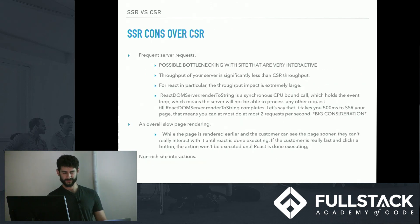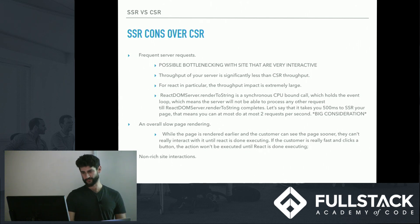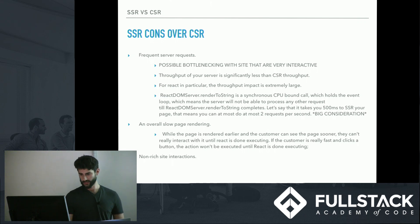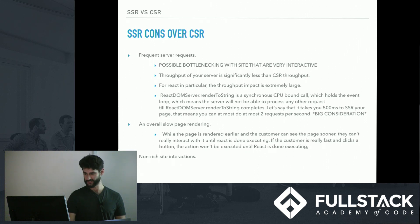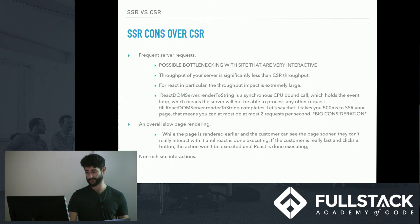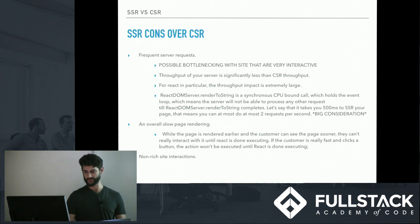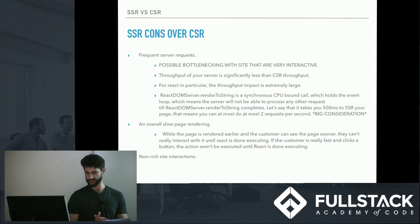The cons of server side rendering: frequent server requests can cause bottlenecking on highly interactive sites. The throughput of your server is significantly less than with client side rendering, and for React in particular the throughput impact is extremely large. ReactDOM server renderToString is a synchronous CPU-bound call — it holds the event loop, meaning the server cannot process any other requests until it completes. If it takes 500 milliseconds to render, that means you can do at most two requests per second. This leads to overall slow page rendering and non-rich site interactions.